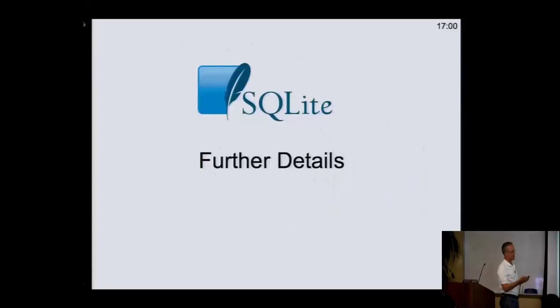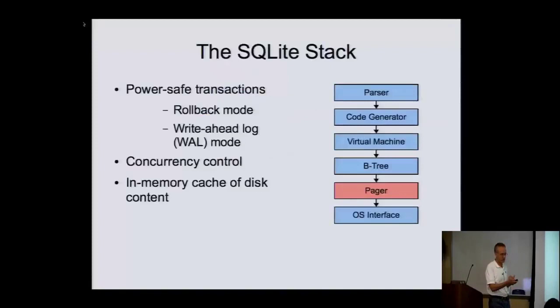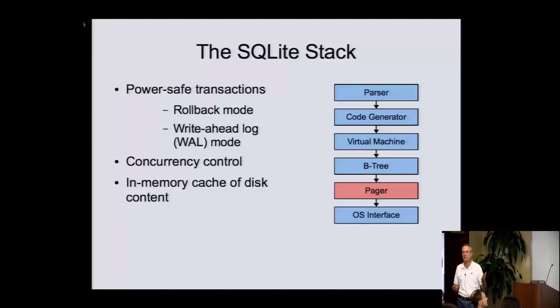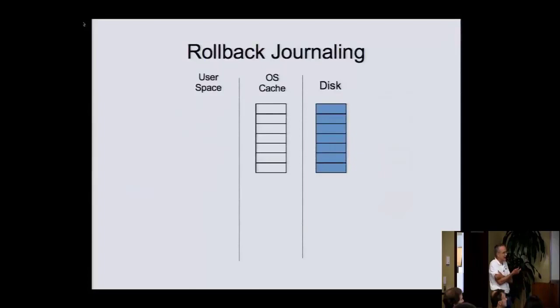That was the 30,000-foot view of SQLite. Now I'm going to go back through from the bottom up and get into a little bit more detail about how things work. Let's start with the pager again — this is what handles power-safe transactions and concurrency control. This is the thing that makes sure you can roll back your transactions, or that if you crash in the middle of a transaction your database is consistent, and that transactions are atomic across power failures. It also provides an in-memory cache for the disk controller.